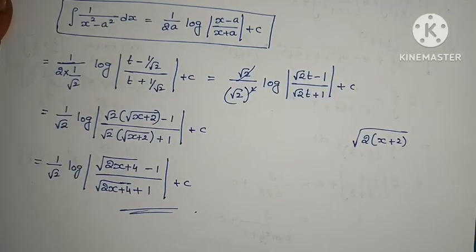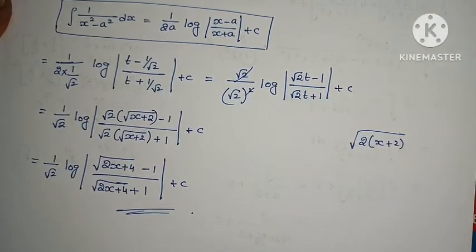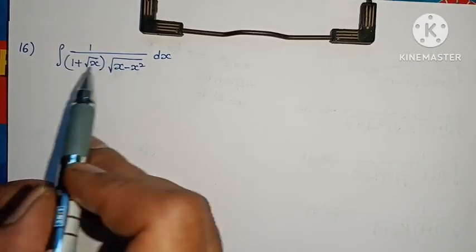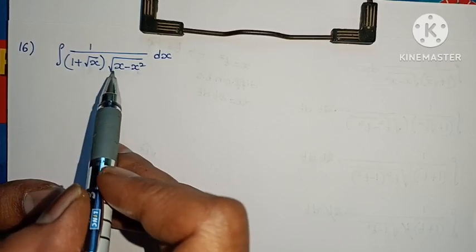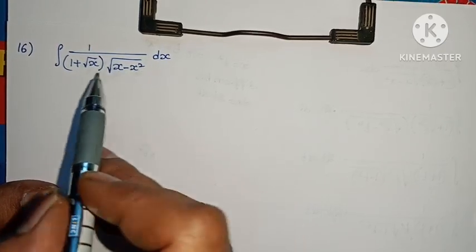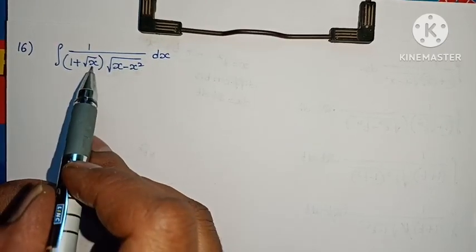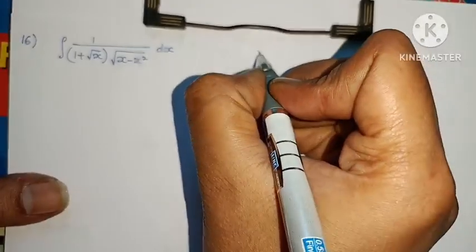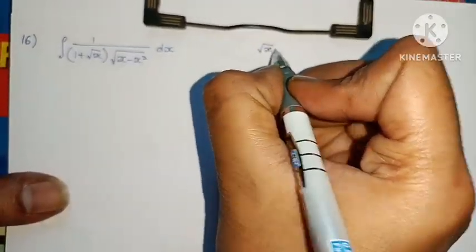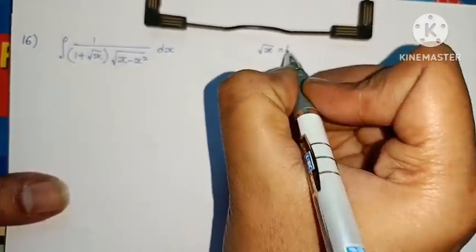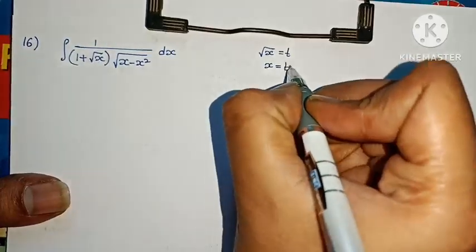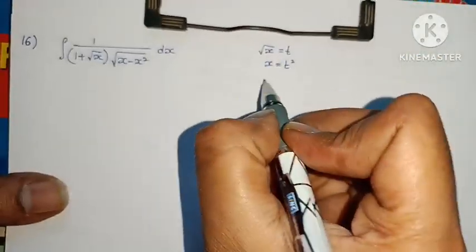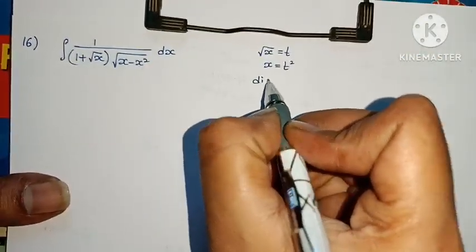Now the next problem: integral of 1 by (1 plus root x) times root of (x minus x squared) dx. Here, since root x appears, let root x equals t, so x equals t squared. Differentiating on both sides.